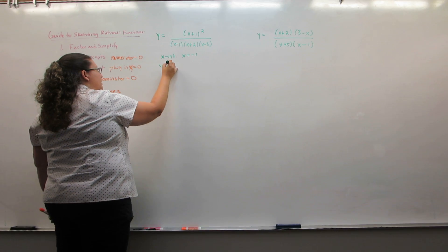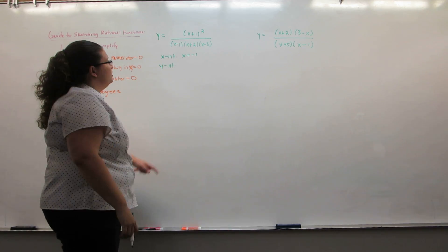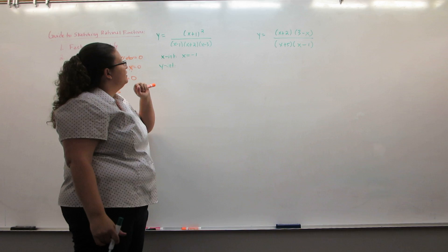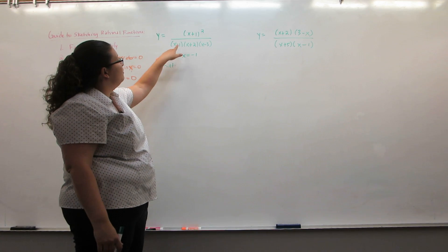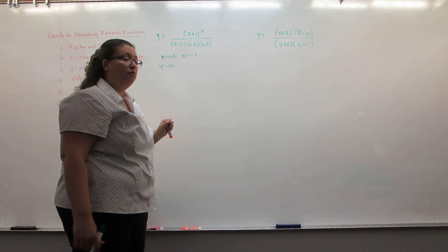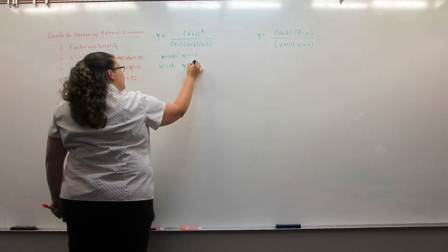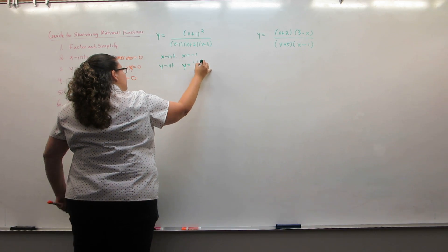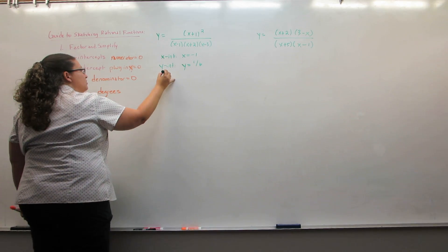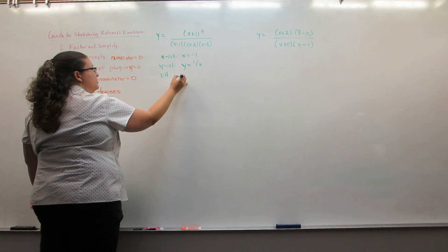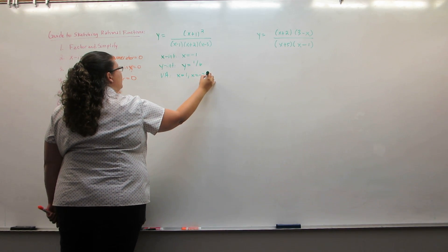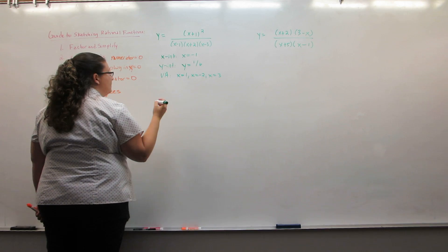For the y-intercept, we plug in x equals 0. So I get 1 squared, or 1, on top. On bottom, I get negative 1 times 2 times negative 3. This gives me a y-intercept of 1 sixth. Vertical asymptotes are everywhere the denominator is 0, so x equals 1, negative 2, and 3.